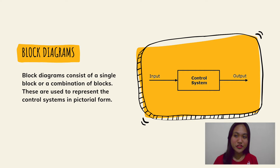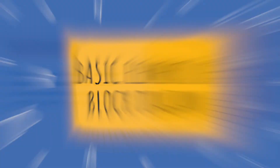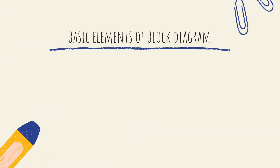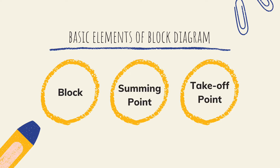To start the discussion, let us first define what is a block diagram. Block diagrams consist of a single block or a combination of blocks. These are used to represent the control system in pictorial form. The three basic elements of a block diagram are a block, the summing point, and the takeoff point.